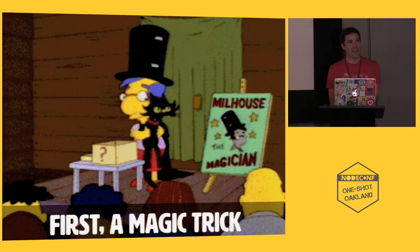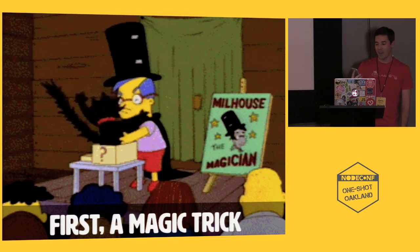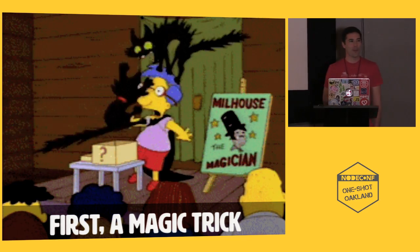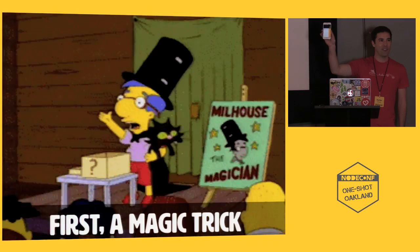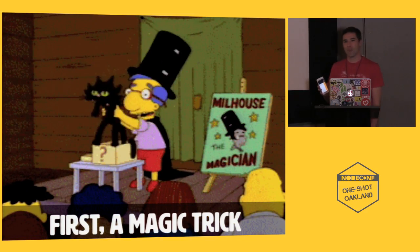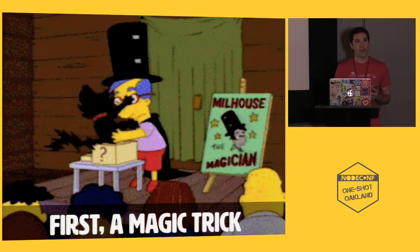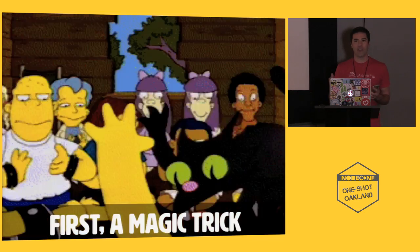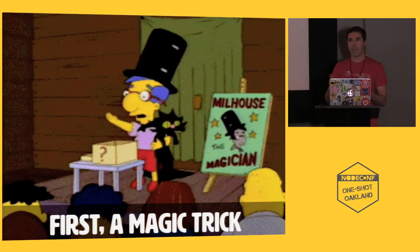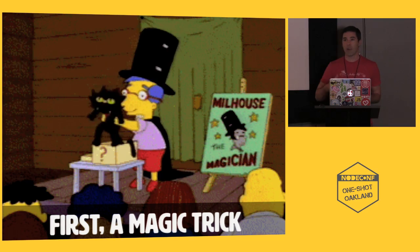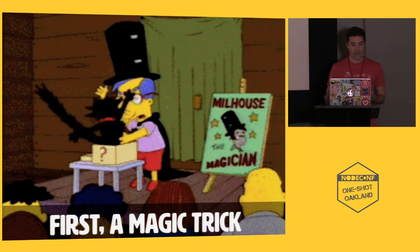I actually need your participation. I need everybody here to pull out their mobile phone. And presumably, if you're using something other than a Motorola Razr, there will be a calculator application on your mobile phone. So just go ahead and pull that out. All we're going to do is I'm going to ask you a bunch of questions that are going to generate unique numbers for you, and we're going to add those numbers together on the calculator.